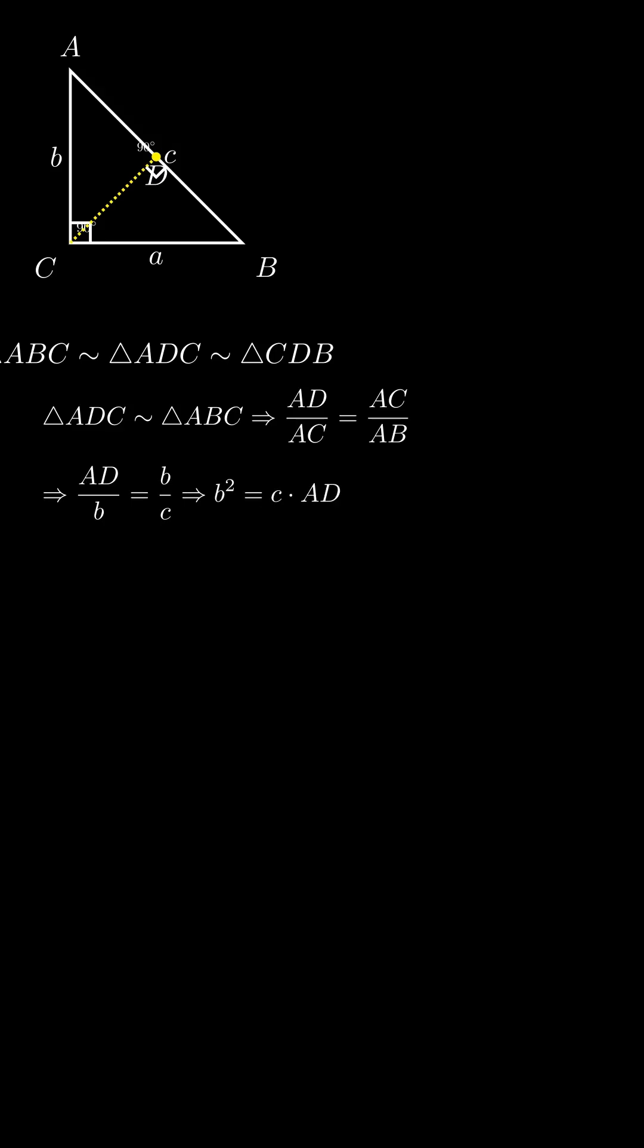Similarly, from triangles CDB and ABC, BD over BC equals BC over AB, which gives a² equals c times BD.